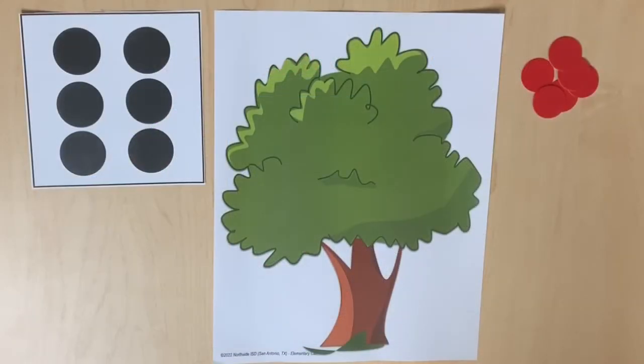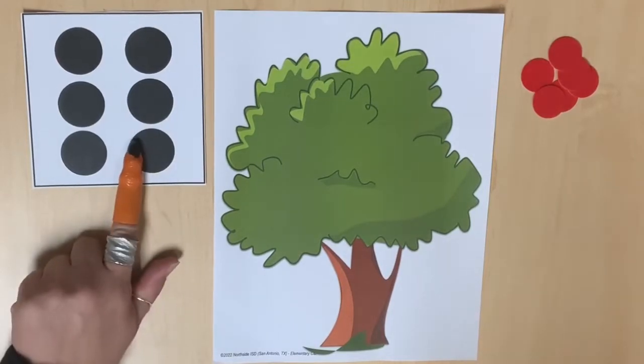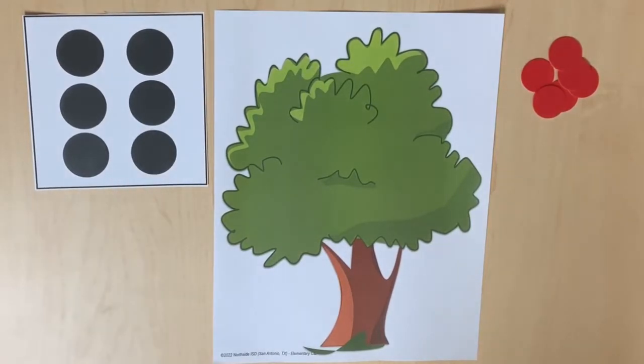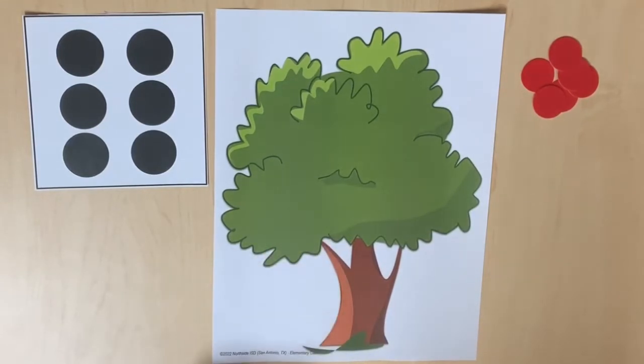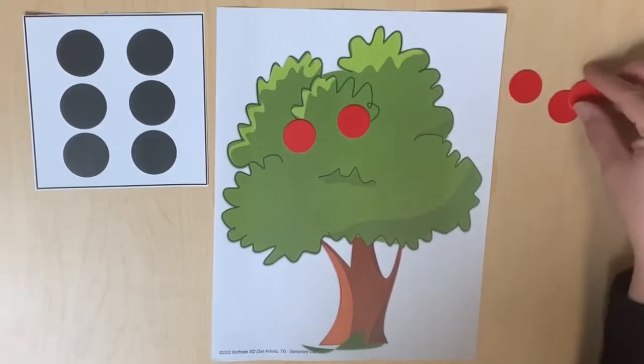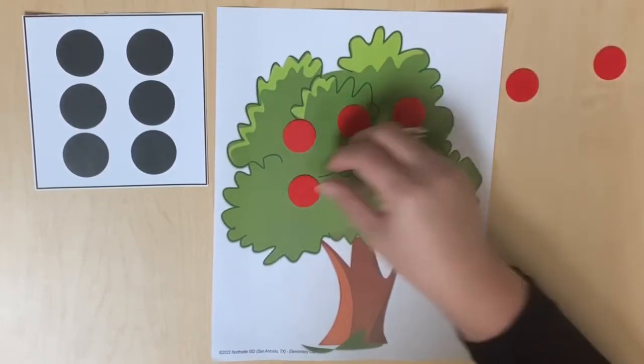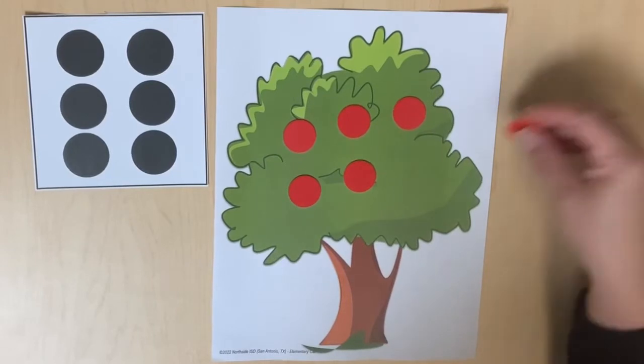Students are presented with organized sets of dots on cards. Those quantities are represented on a workmat with objects while students count forward: 1, 2, 3, 4, 5, 6.